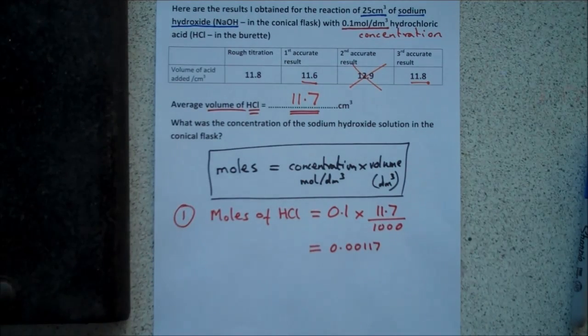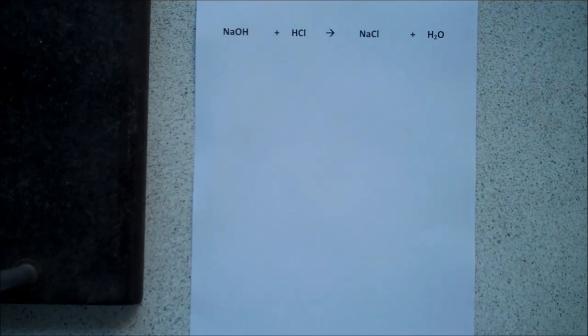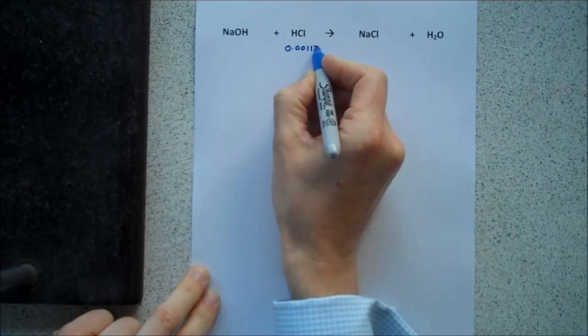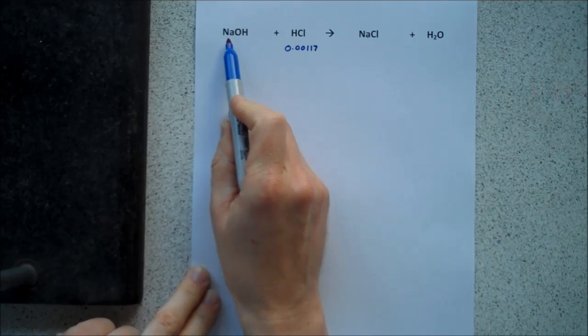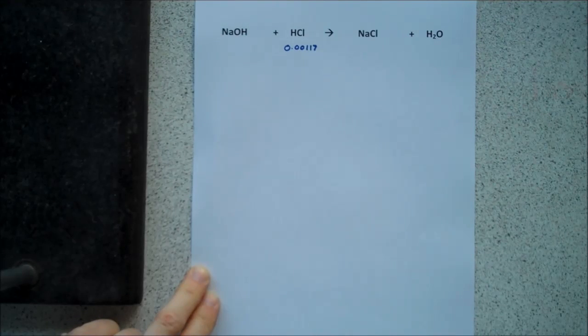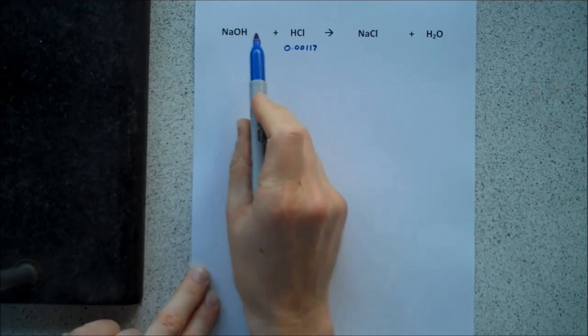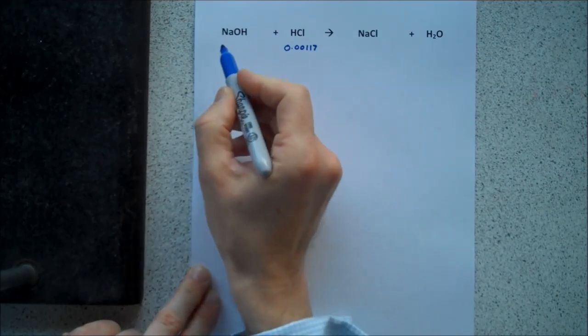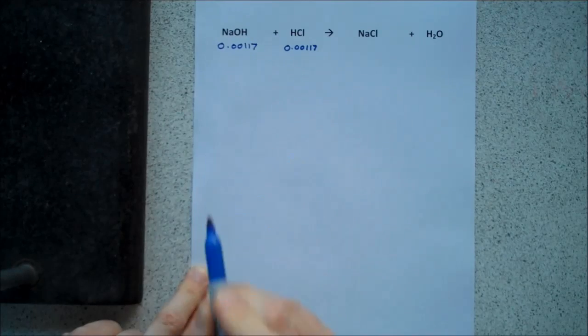So, we know our moles of HCl. Now, we're going to use the balanced equation to work out the moles of sodium hydroxide. We know that the moles of acid is 0.00117. Here's the balanced equation. It tells us that one mole of sodium hydroxide reacts with one mole of hydrochloric acid. Now, we know this has happened in our reaction.